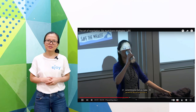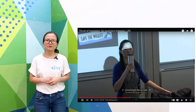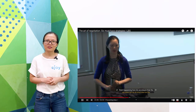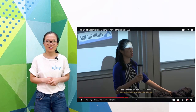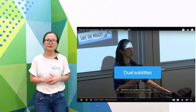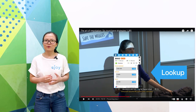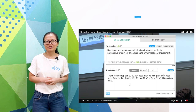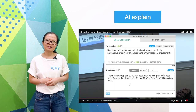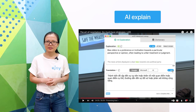You can choose any YouTube videos you want. eJoy helps you understand the content through dual subtitles, look up words while watching, and uses AI to explain any new concept.